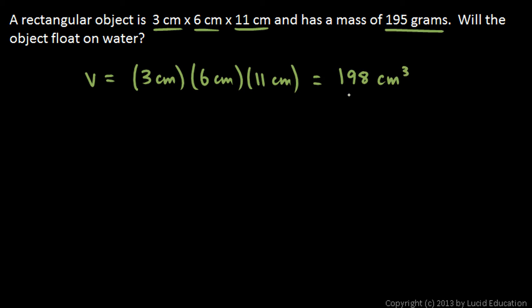And we get cubic centimeters. And then we calculate the density. Density is mass divided by volume, and the mass is given: 195 grams over the volume, which is 198 centimeters cubed.